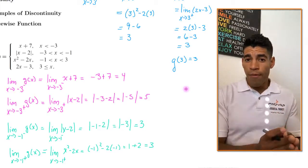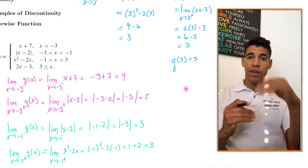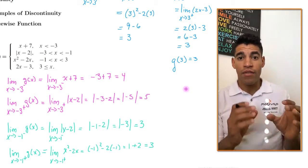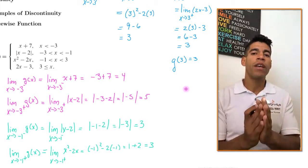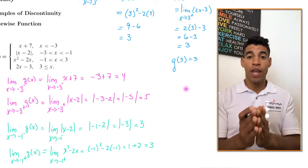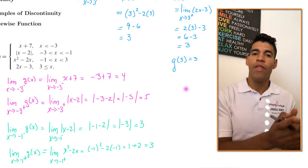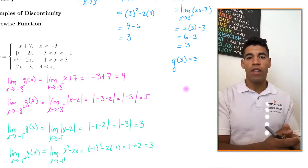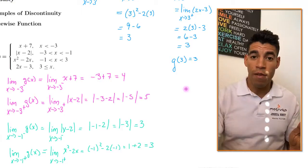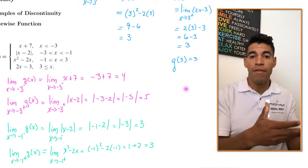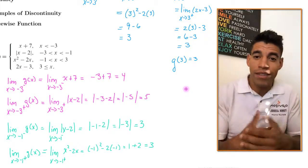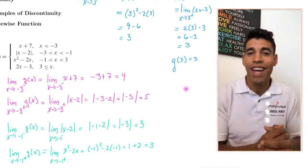So we've summarized three points: at negative 3 there is jump discontinuity — it's essential; at negative 1 there is removable discontinuity; and at 3 it is continuous. This is how you find this type of discontinuity or continuity in a piecewise function. I hope you enjoyed the video — please like, subscribe, and share. Have a great day!